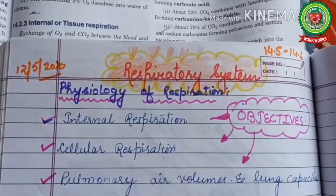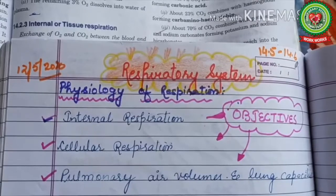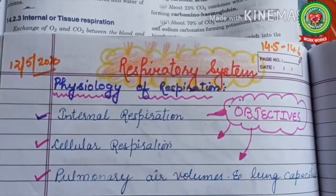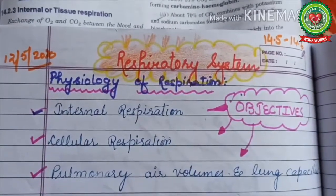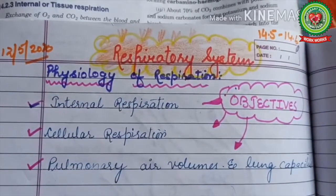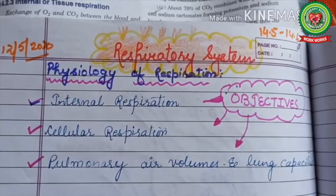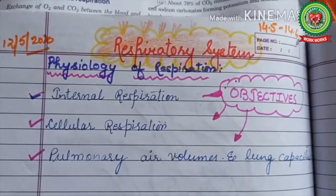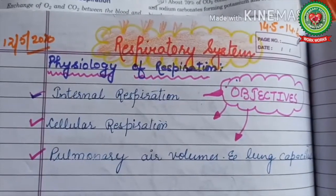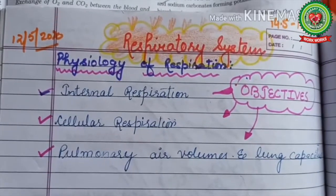Before starting with the topic, I would like to tell you what the various objectives of today's lecture are. In today's lecture, children will come to know what is internal respiration, what is cellular respiration and how it occurs in detail, and which are the various pulmonary air volumes and lung capacities. Kindly open your book at page number 14.5.